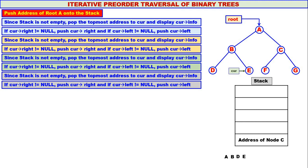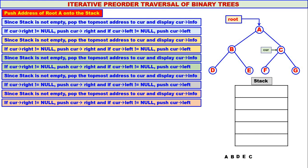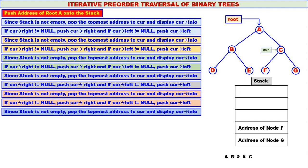The right child of E is null and the left child of E is also null, so no pushing. The stack is not empty — it contains the address of node C. We pop node C to curr and display C. Curr's right is node G, which is pushed onto the stack. Curr's left is node F, which is also pushed. We pop the topmost — node F — and F is displayed.